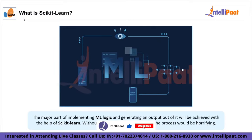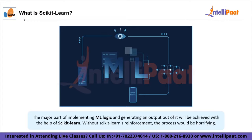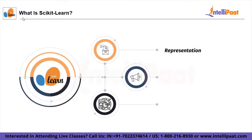Teaching a computer to understand thousands or even lakhs of data records and then making predictions when similar data is provided in future instances is quite a complex process. But thanks to statistics, mathematics, and programming, we have managed to simplify this complex process to something that even freshers can get their hands on — a magical tool that can predict the future when exposed to historic data. Now, a good library for machine learning should possess three things: representation, evaluation, and optimization.